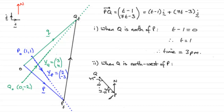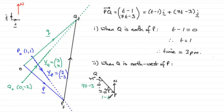We've got essentially an isosceles right-angled triangle, so these two lengths must be exactly the same. We know this vector is 7t minus 3 in the J direction. The I component, t minus 1, is in the negative sense — for example minus 3i has magnitude 3. So we need the negative of that value: minus t plus 1, or 1 minus t.